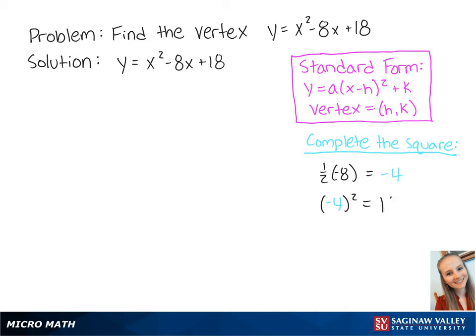Now we can manipulate the original equation to give us y equals x squared minus 8x plus 16 plus 2. Now we can finally complete the square in the equation to give us y equals x minus 4 squared plus 2.